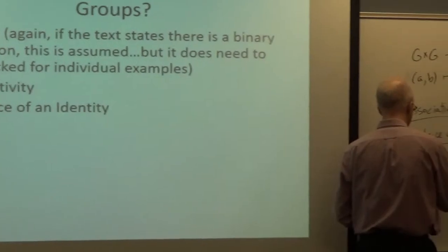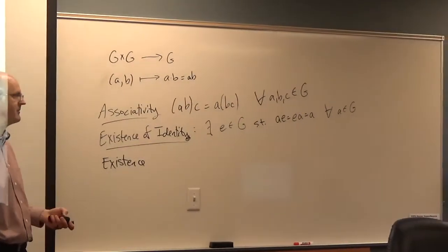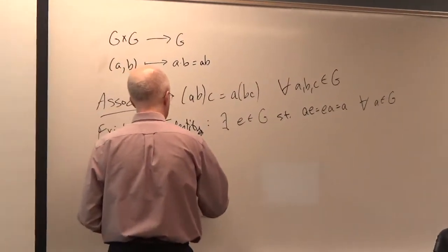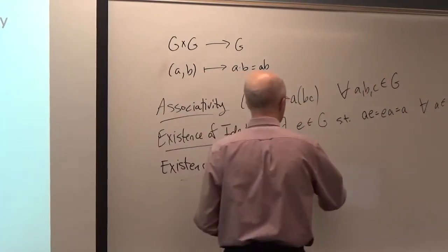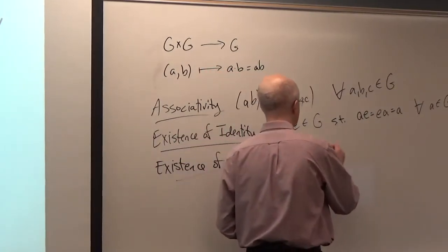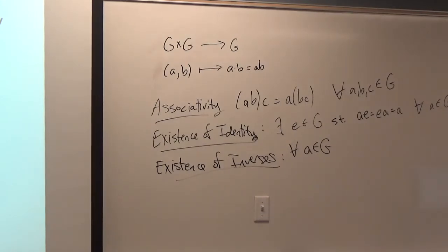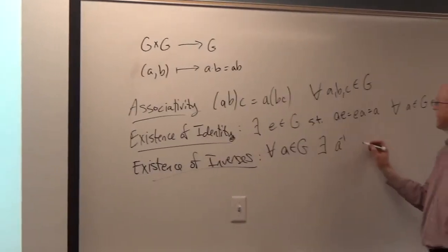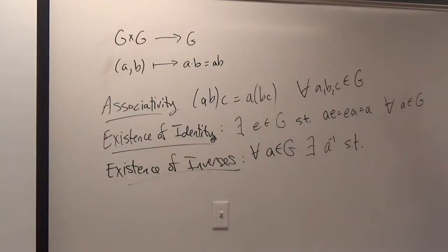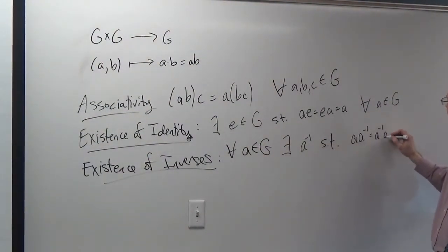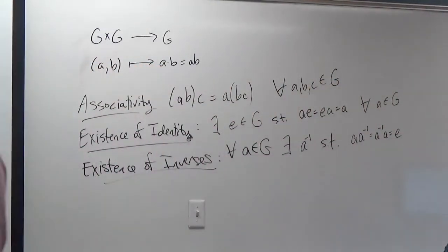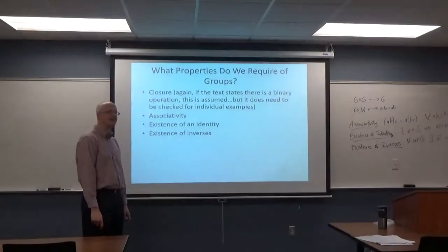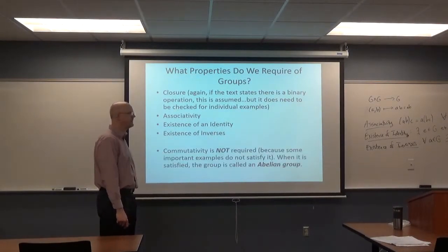And existence of inverses. For all a in g, there exists an element. We will traditionally call it a inverse and write it like that. Such that when you multiply it on either side of a, you get back the identity. a times a inverse equals a inverse times a equals e. Anything else? Commutativity? Well, no. Technically not. Commutativity is not required. Why not?